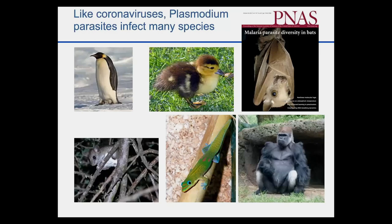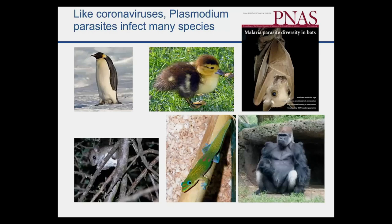An interesting feature of malaria parasites is that they can infect many different species. There are over 170 different plasmodium species — some affect penguins, some affect ducks, like coronaviruses they can be found in bats and mice, gecko, and also in gorillas and chimpanzees. There might be even more plasmodium species than currently documented; it's probable that we just haven't looked hard enough.